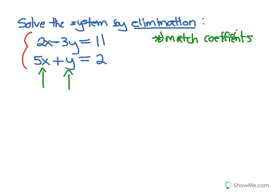When I say we want to match them up, we want the same coefficient on x in equation 1 as on x in equation 2, or the same coefficient on y in equation 1 as on y in equation 2. Right now none of the coefficients match up — we have a 2 on x in the first equation and a 5 on x in the second. We have negative 3 on y in the first and positive 1 on y in the second. Also don't match.